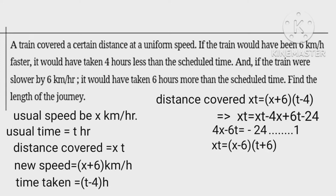Implies that xt equals xt plus 6x minus 6t minus 36. Therefore 6x minus 6t equals 36. This is equation second.